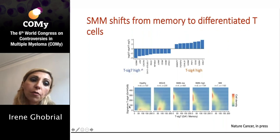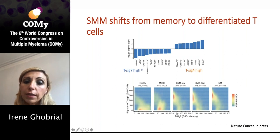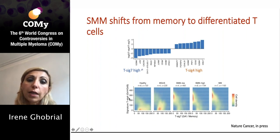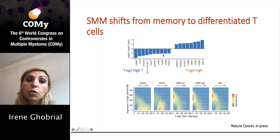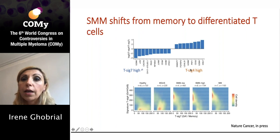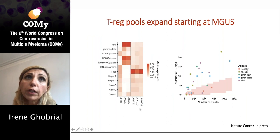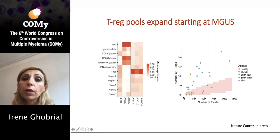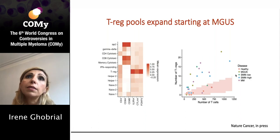There is a shift between T effectors and T memory. As you go from healthy individuals to myeloma, signature 7 related to memory T cells keeps decreasing while signature 4 related to effector T cells keeps increasing — indicating a loss of memory T cells and retention of only effector T cells. Tregs are also very important; we published previously in JCI that depleting Tregs can actually completely control myeloma progression. We find a significant increase in Tregs going from healthy to MGUS to smoldering myeloma to overt myeloma, indicating that T regulatory cells are essential bad players in myeloma progression.